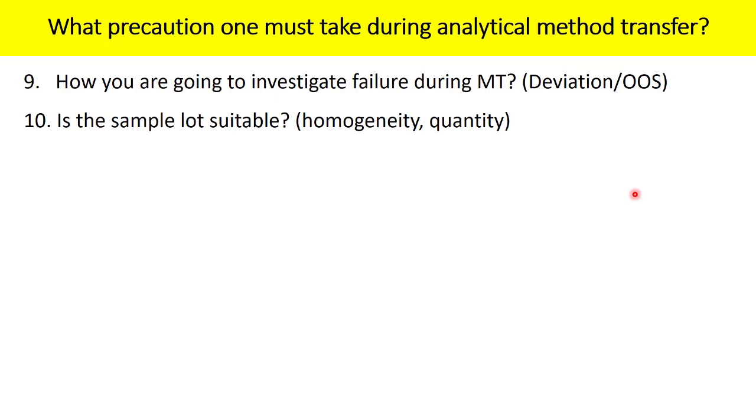Is the sample lot suitable? Whenever you are conducting a method transfer, you are going to compare the result between two labs, for example. And in case if the sample itself is not homogeneous, how come the results will be homogeneous? I mean homogeneous could not be the right term for the result to say, but we can say closely associated to each other. Because the sample is non-homogeneous, how you are going to predict the repeatability of analytical result? How you are going to compare the result between lab 1 and lab 2? In case if the sample itself is the sole reason for the variation.